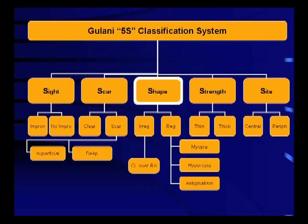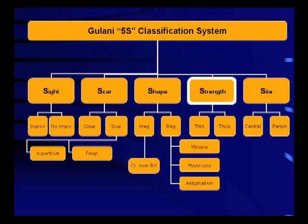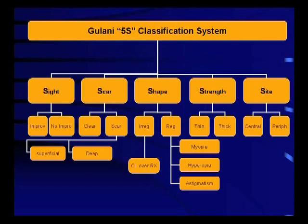The third S is shape — regular shapes like myopia, hyperopia, or astigmatism, and irregular shapes seen in corneal pathologies and previous refractive surgeries, which can be determined before surgery using a hard contact lens trial. The fourth S is strength: is the cornea thin, as in keratoconus or post-LASIK ectasia? Or is it thick, as in epiceratophagia? In thin corneas, we may have to build the cornea using lamellar techniques to prepare for laser refractive surgery, while in a thick cornea, we may need to peel the corneal lenticle off to achieve normalcy before laser.